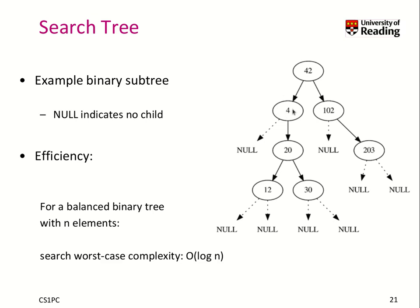Here we have 4. We know 4 is smaller than 32, so we have to go to the right. Here we have 20. 20 is smaller than 32, we go to the right. Here we have 30, and 32 is bigger, so we go to the right. Here it's null, so we know we have searched the whole tree and haven't found our solution. That reminds us a little bit of binary search, because every time we do a comparison, we can basically disregard the other half — the other child with all its descendants.